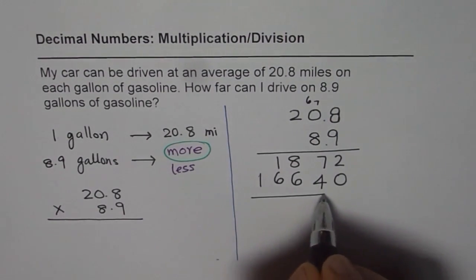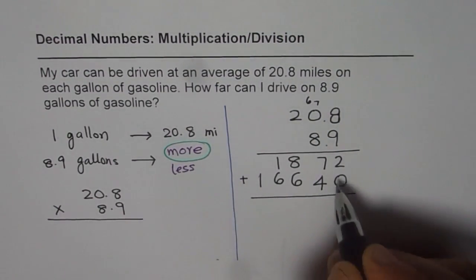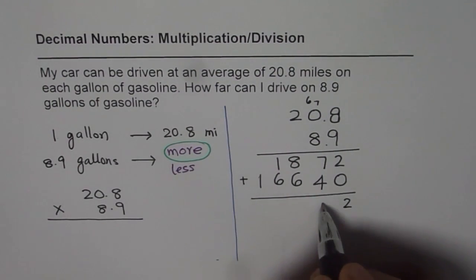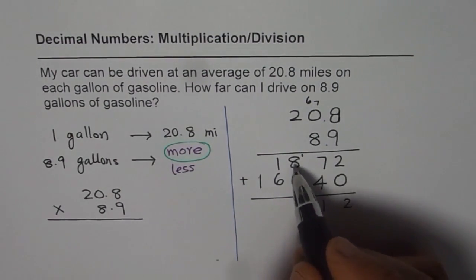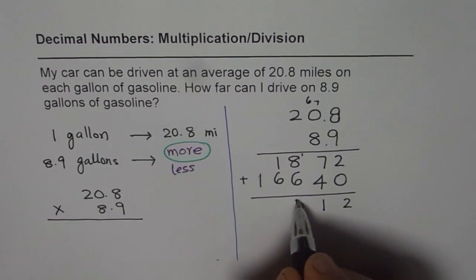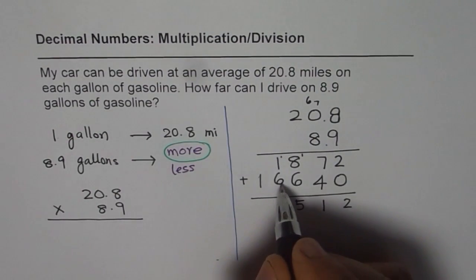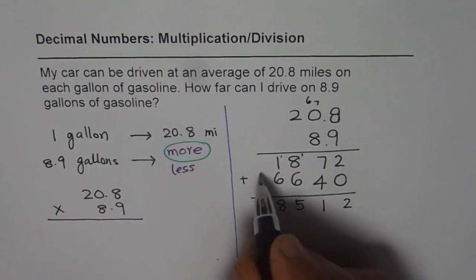And now we are going to add them up. So we have 2 here. 7 plus 4 is 11, so 1 here. 9 plus 6 is 15, so 5 and 1 more. 6, 7, 8, and 1.